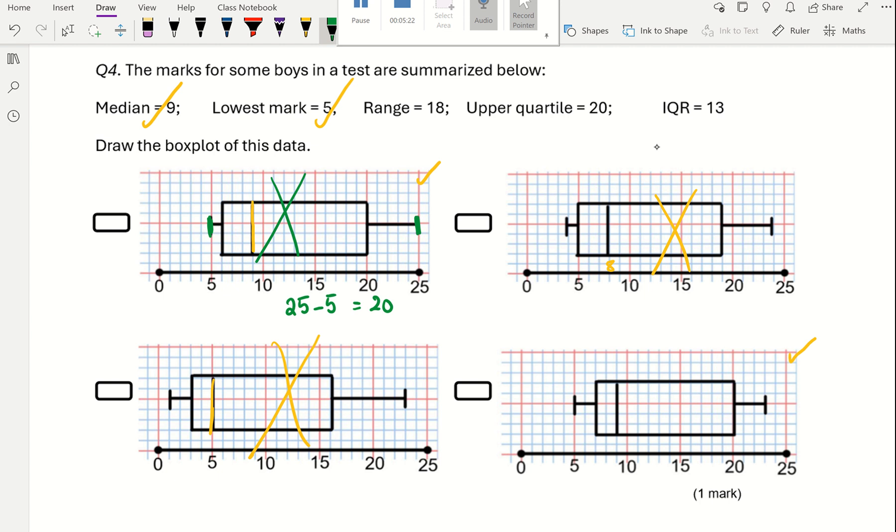You can see that the only one left is the last one. Now just make sure you check. The range is 18, so that's 23, 1, 2, 3, and that's 5. So the range, 23 minus 5, is certainly 18.